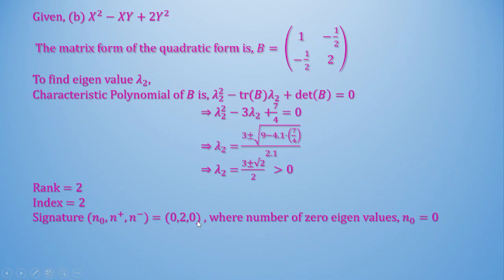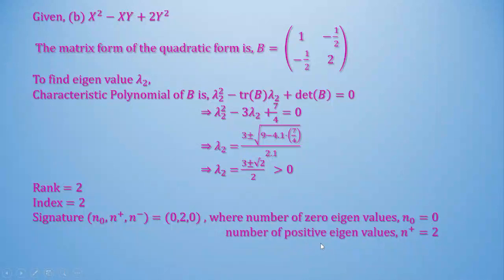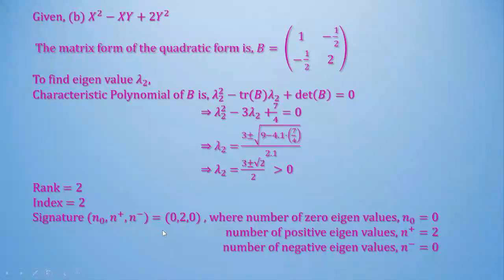So for quadratic form B: index is 2 and signature is (0, 2, 0), because the number of zero eigenvalues is 0, the number of positive eigenvalues is 2, and the number of negative eigenvalues is 0.